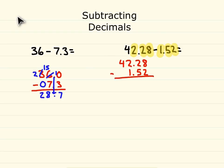Go ahead and do this. We have subtraction. So, we have 8 hundredths minus 2 hundredths is 6 hundredths. We cannot take 5 tenths away from 2 tenths, so we need to borrow.